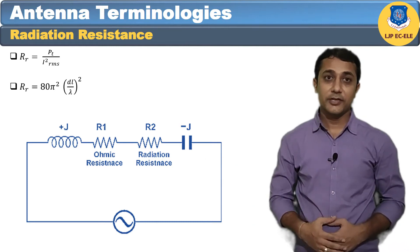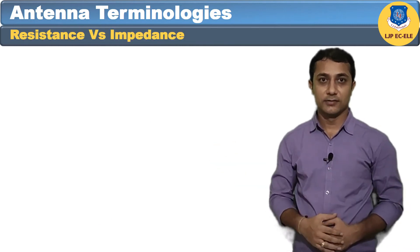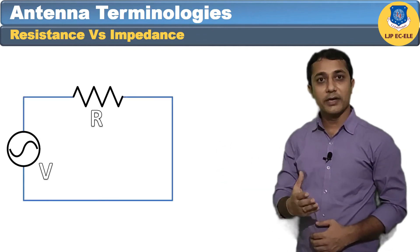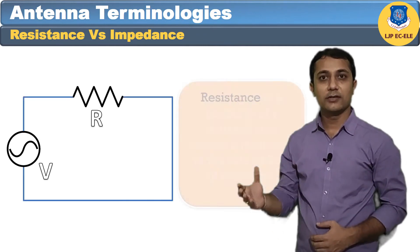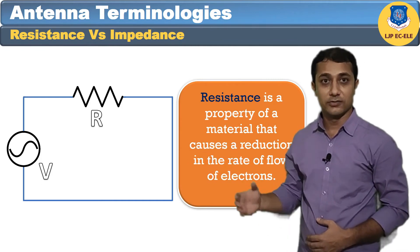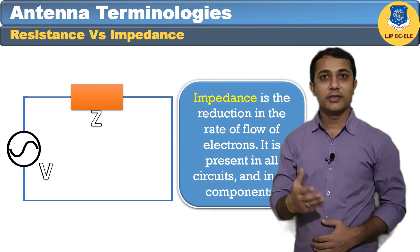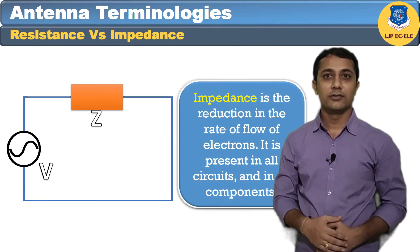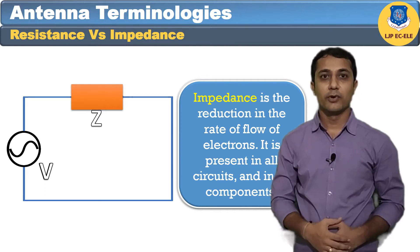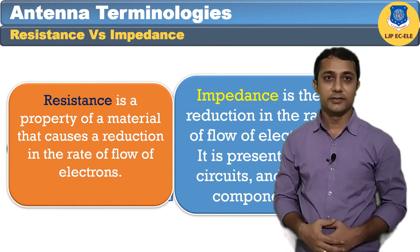You may wonder about the difference between impedance and resistance. Resistance is a property of a material that causes a reduction in the rate of flow of electrons, whereas impedance is the reduction in the rate of flow of electrons present in all circuits and all components. That is the difference between impedance and resistance.